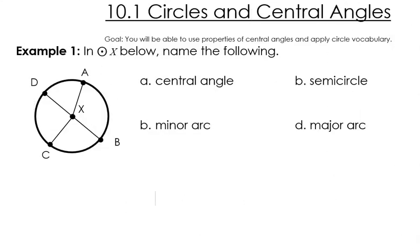What we're looking at here are circles and central angles. If you have these notes printed, that is fantastic — you can go along with them. If you don't, just follow along the best that you can. So we're looking at this circle, and we want to name the following things. We're looking for a central angle.